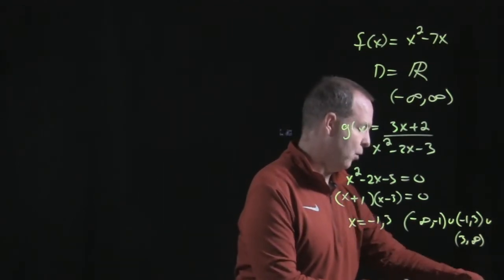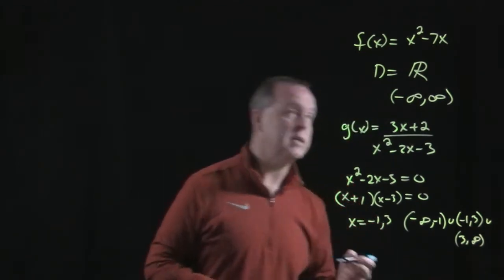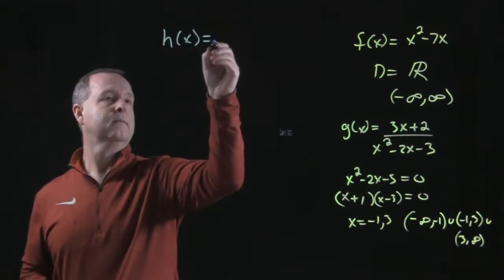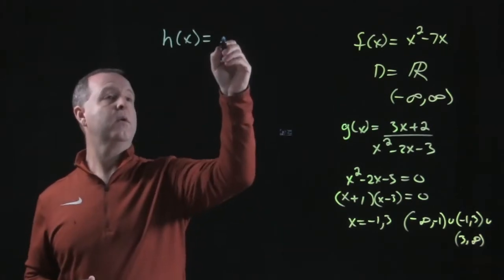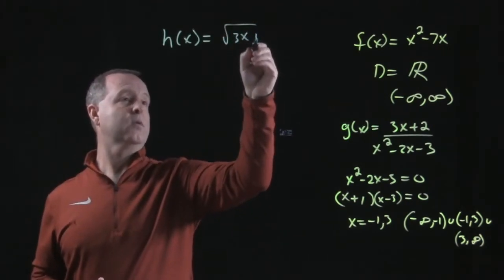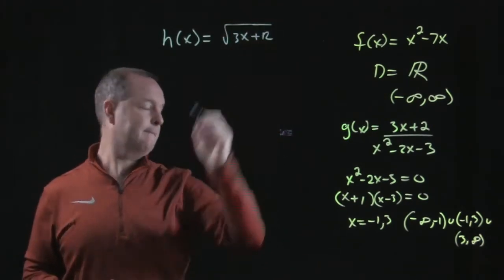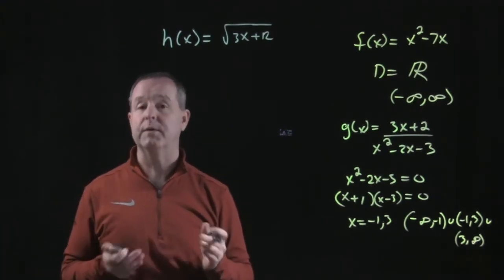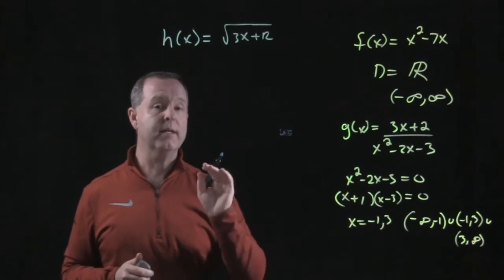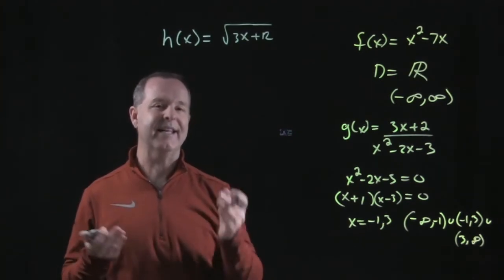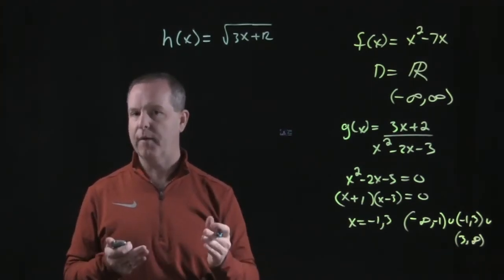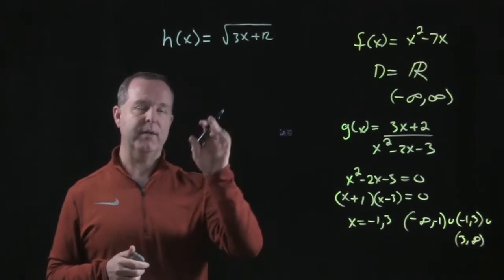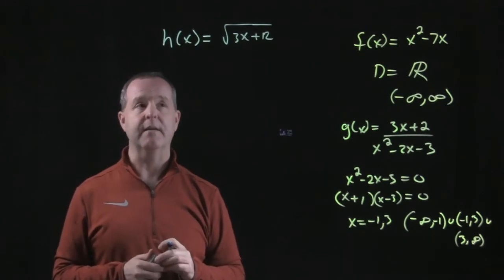All right, let's look at another one. Let's look at h(x). And this one's going to equal √(3x + 12). So what do you notice? Obviously you notice we have a root involved. And not only do we have a root involved, it's an even index root, like the square root, the fourth root, or the sixth root. Even roots, we have to be careful that we do not have a negative underneath of that.